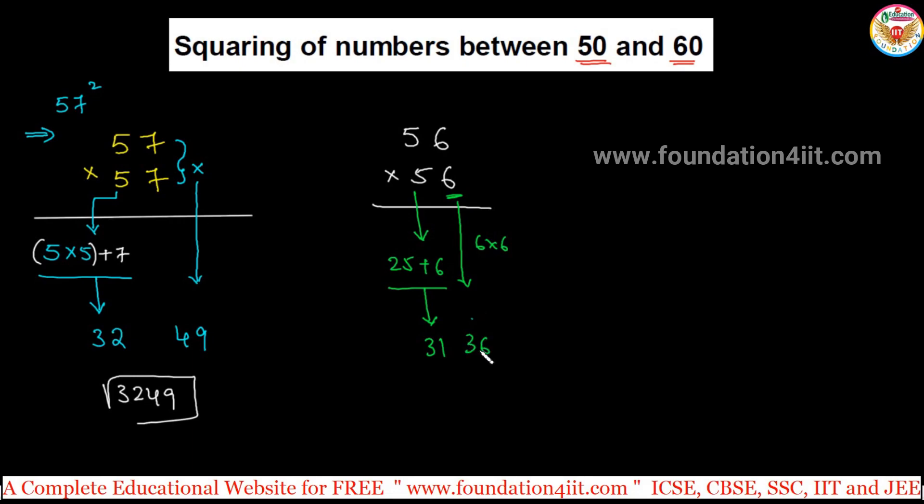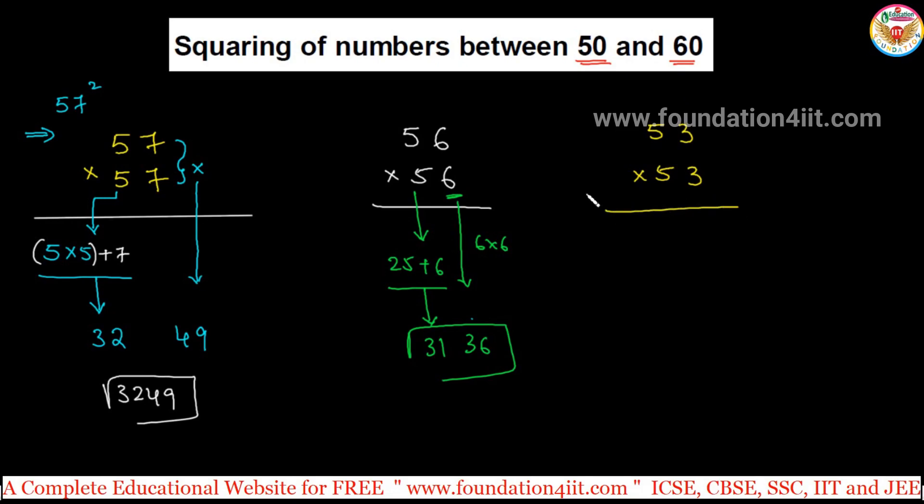Any combination - like one more is 53 into 53, only starting with 5. Just remember that between only 50 and 60, I applied this. 53 square, so simple: 5 into 5 is 25